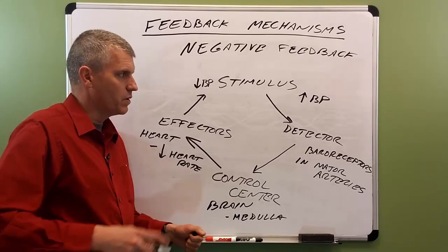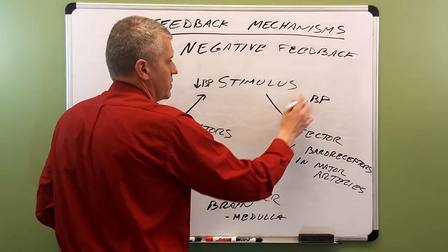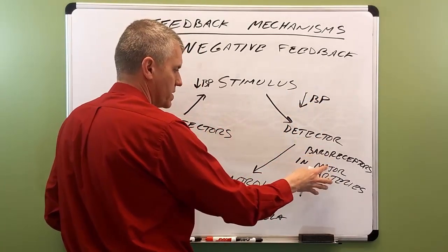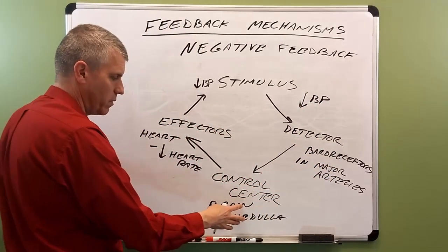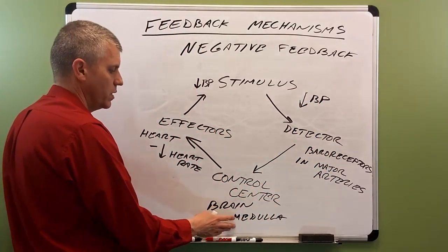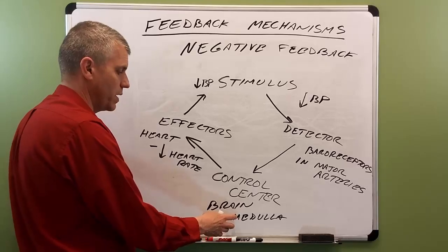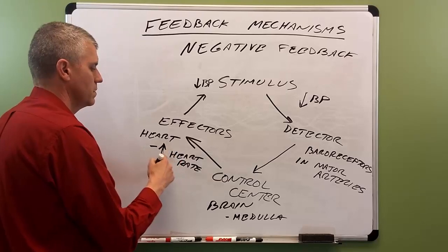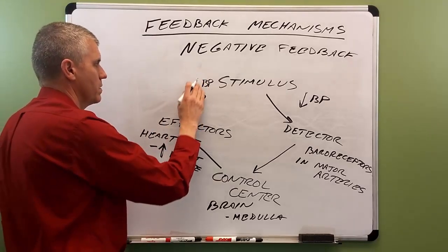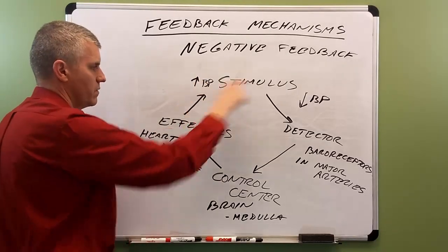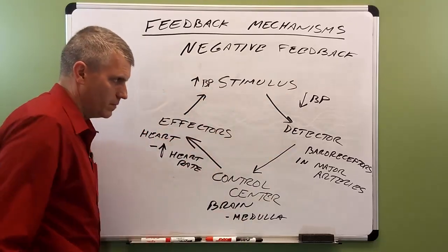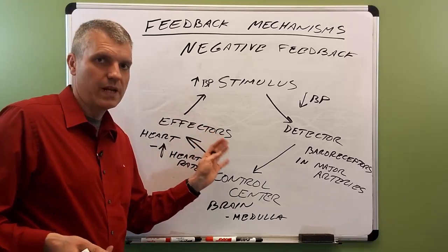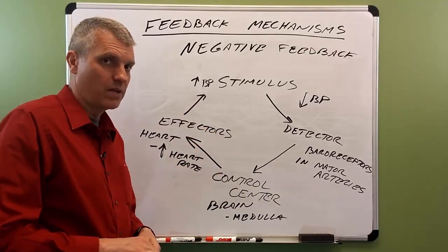And by the way, the same story could be told in reverse. Imagine if the blood pressure went down. The same receptors are going to detect that — the baroreceptors detect that the blood pressure went down. They report that to the medulla oblongata. The medulla oblongata says blood pressure is down, we need to bring it back up again. So it signals to the heart, causes the heart rate to increase. And with an increased heart rate, you're going to see an increase in blood pressure. You can think of this negative feedback loop operating all day long inside of you to keep blood pressure where you need it to be, within a homeostatic range.